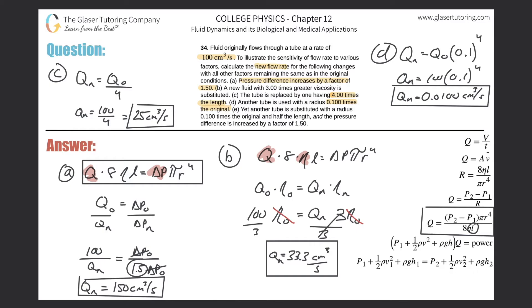Letter E: yet another tube is substituted with radius 0.1 times the original and half the length, and the pressure difference is increased by a factor of 1.5. So there's a bunch of things happening now.